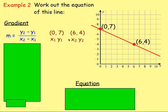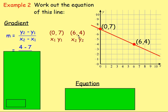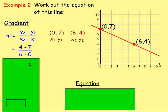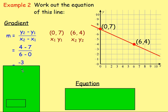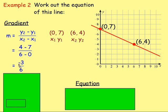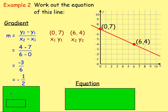Substituting in: y2 take away y1 gives 4 take away 7, and x2 take away x1 gives 6 take away 0. 4 take away 7 is negative 3, and 6 take away 0 is 6. Ignoring the negative, 3 over 6 simplifies — divide both by 3 — to one half. And because we've got a negative and a positive, our final answer will be negative. So the gradient is negative one half.